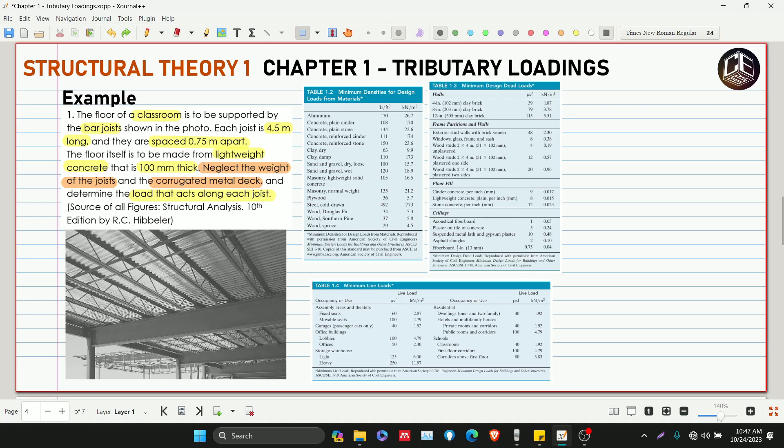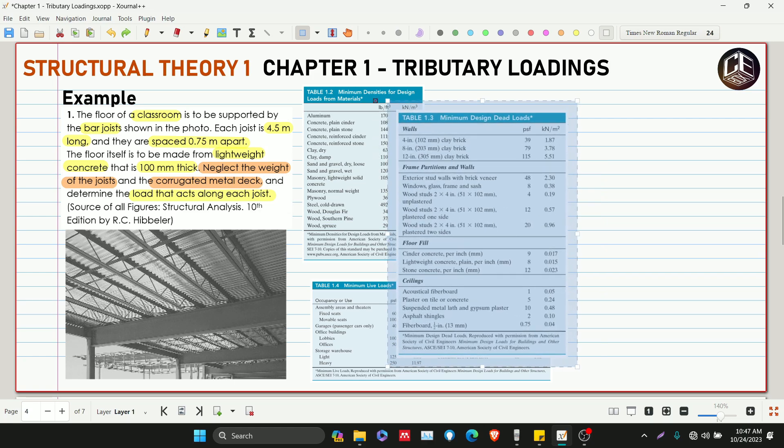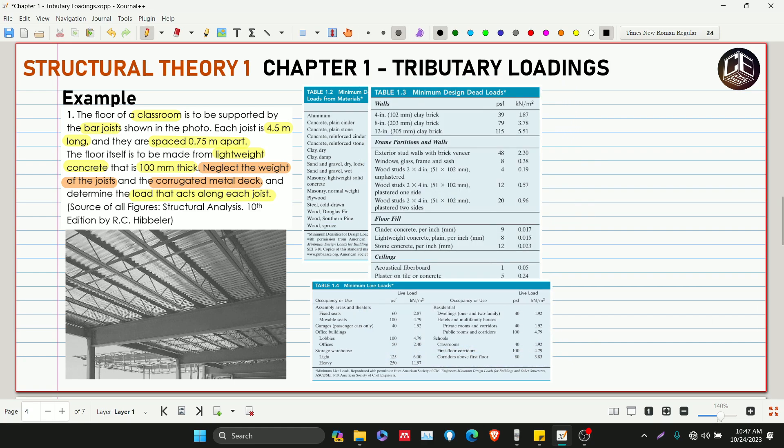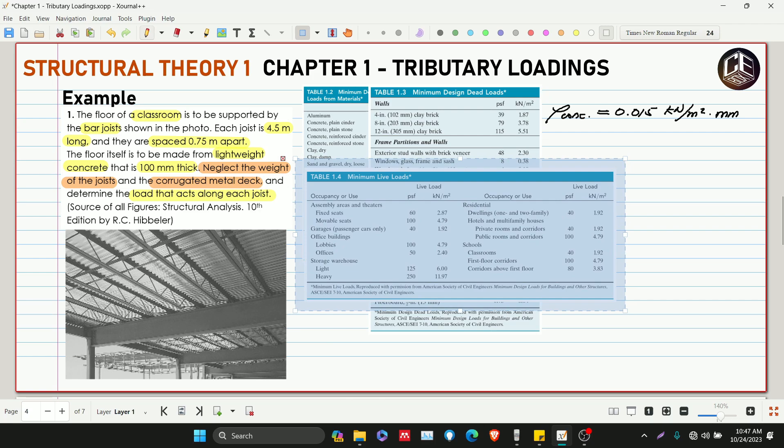Let's draw this in top view. First, let's get the density or the dead loads and live loads. It says here lightweight concrete. For lightweight concrete in meters, it's 0.015 kilonewtons per meter squared per millimeter. For the live load, the floor is to be used for classroom purposes, so under school classroom it's 1.92 kilonewtons per meter squared.